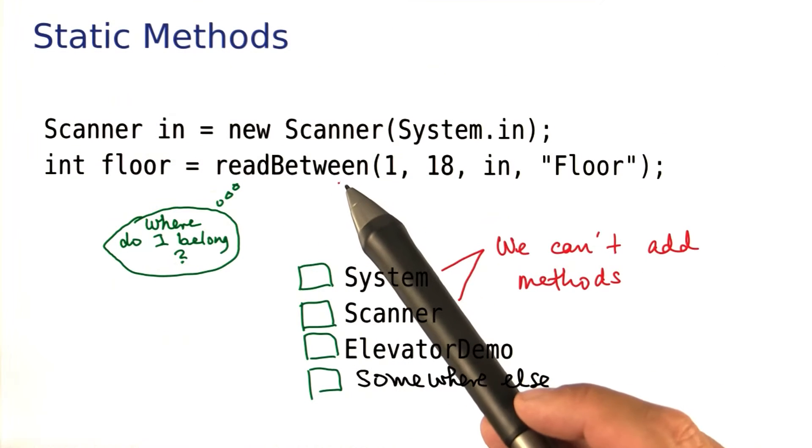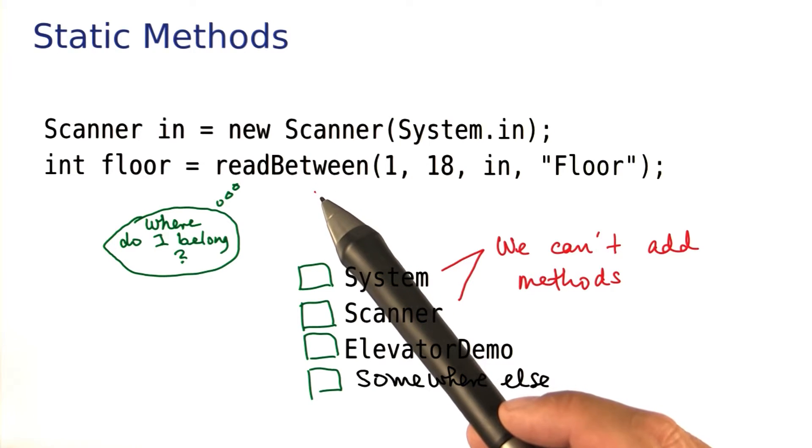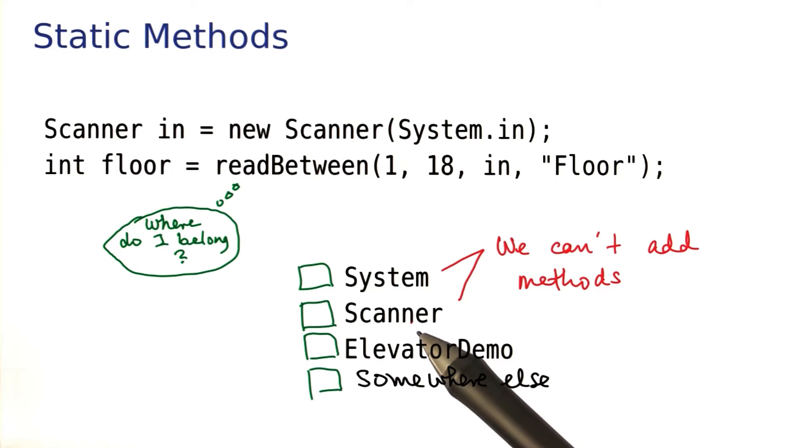So going back here, that is the crux of the problem. Read between is not called on an object. And there really isn't a great object to call it on. It would have been nice to call it on the scanner, but like I already said, we can't do that.